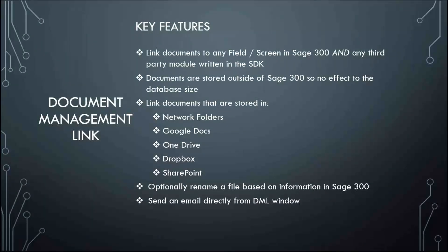One of the key benefits of Document Management Link is that we're storing documents outside of Sage 300, so we're not affecting your Sage database in any way. You can store those documents using network folders, but if you want to use Google Docs, Dropbox, OneDrive, or SharePoint, you can use any of those document depositories in the same way that you'll see today.